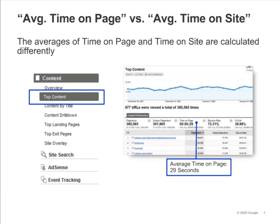For average time on page, bounces are excluded from the calculation. In other words, any time on page of 0 is excluded from the calculation. For average time on site, bounces remain a part of the calculation. To calculate average time on site, Google Analytics divides the total time for all visits by the number of visits.